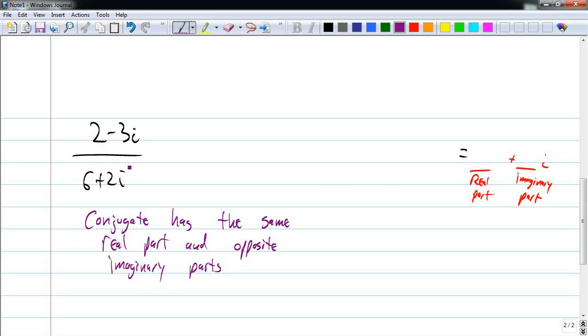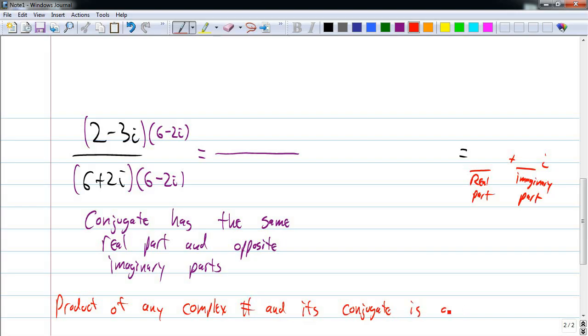So I'm going to multiply this with 6 minus 2i. Same real part, opposite imaginary part. And what I do to the denominator, I also have to do to the numerator. Now the reason why I did this has to do with what happens when you multiply any complex number with its conjugate. The product of any complex number and its conjugate is a real number.